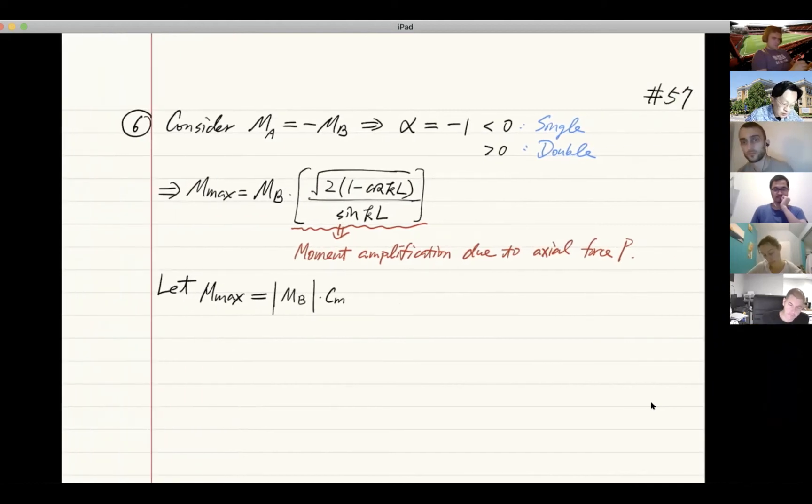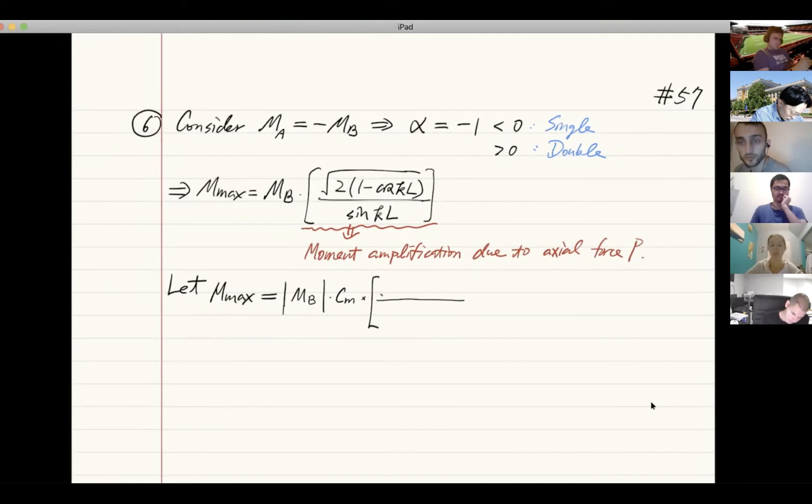How do we get expression for CM? This is how I'm going to show you. We're going to write this to be MB, take absolute value of MB times CM, an unknown coefficient, times this thing. That's the case when MA equals negative MB. We said this is going to be square root of 2 times 1 minus cosine KL, divided by sine KL.